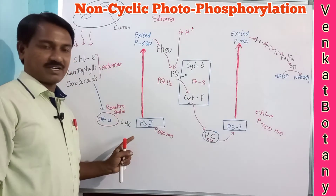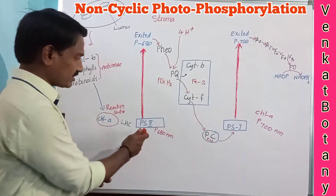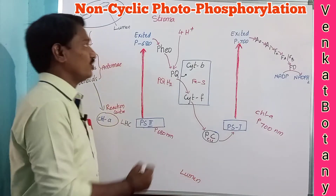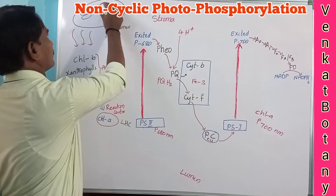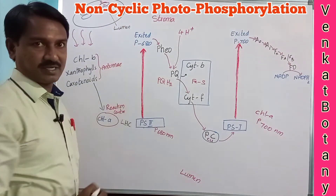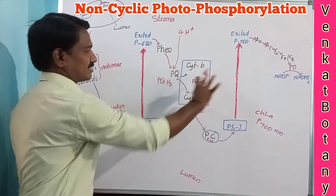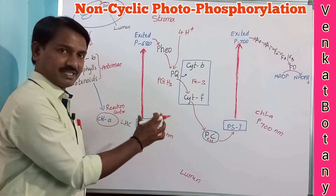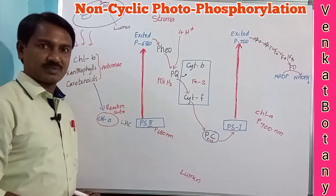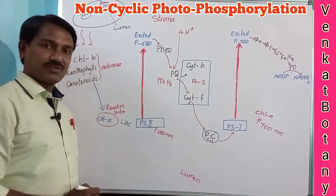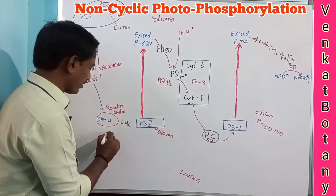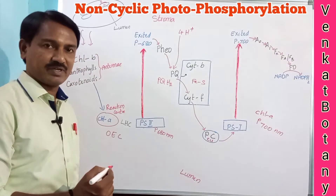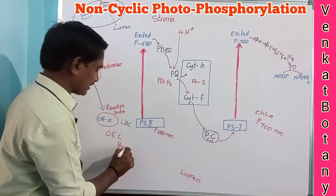In the non-cyclic electron transport system, two photosystems are involved: PS2 and PS1. The thylakoid has a lumen portion on one side and a stroma region on the other side. Initially PS2 is involved, and towards Photosystem 2, there is the oxygen evolving complex (OEC), where photolysis of water occurs.